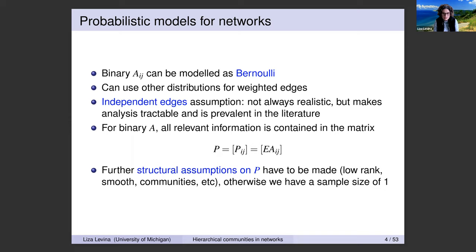If we think about a binary matrix with independent Bernoullis, all we need to know is the probability of one. All the relevant information is contained in the expectation matrix of the adjacency matrix, which is just a matrix of probabilities. If you have one network and look at this P, you cannot estimate anything from a sample size of one per entry. You need some structural assumptions on P. In the literature, people have assumed low rank, smoothness, communities—block structure—and many others.